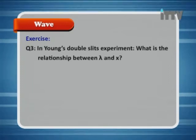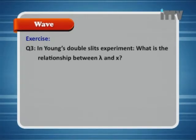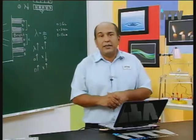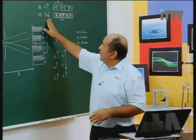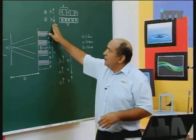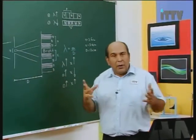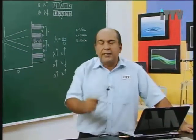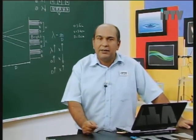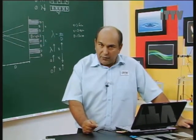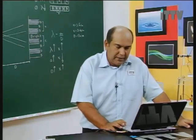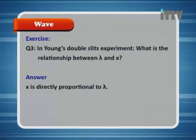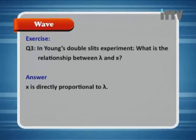In Young's double slit experiment, what is the relationship between lambda and X? The answer: X is directly proportional to lambda.